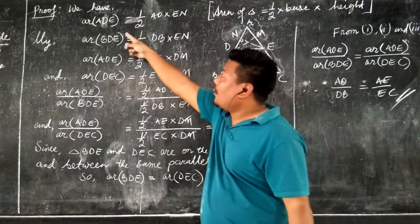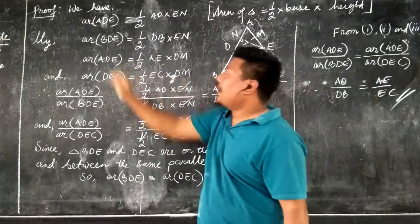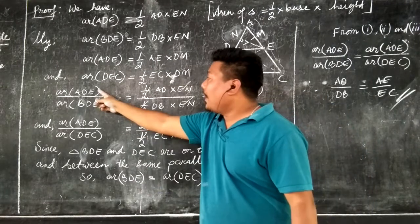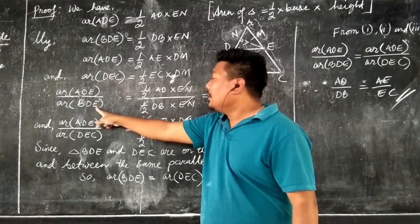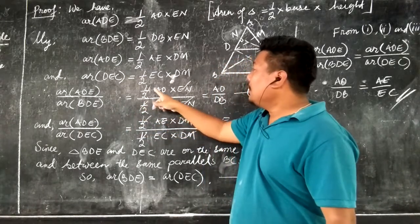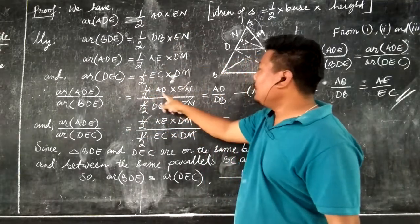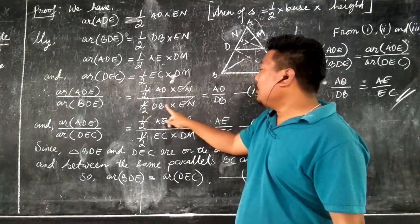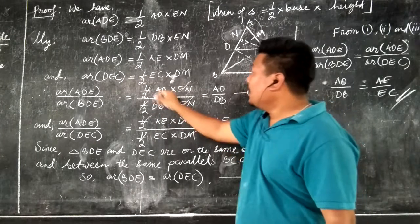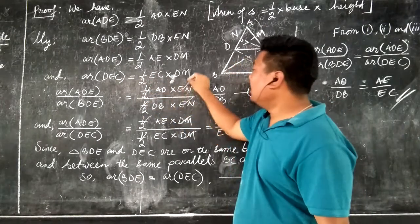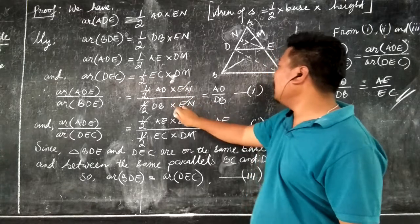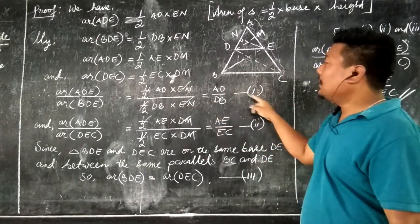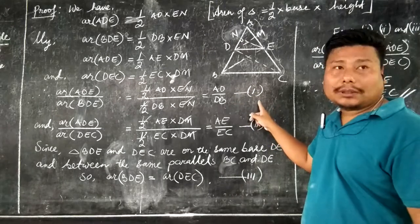Now let us divide area of triangle ADE by area of triangle BDE. Area of triangle ADE divided by area of triangle BDE equals (half × AD × EN) divided by (half × DB × EN). After canceling the common terms, we get AD by DB. Let us mark this as Equation 1.